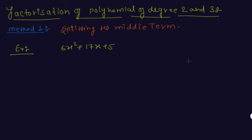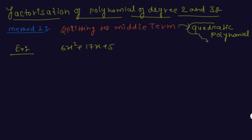The first method is splitting the middle term, and it is basically used for quadratic polynomials. So this method is used for quadratic polynomials, which have the general form ax² + bx + c.